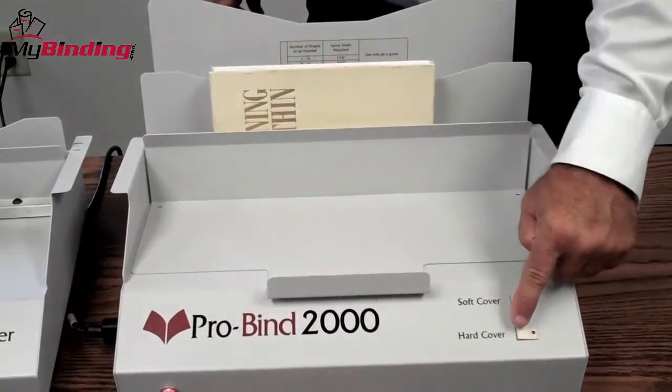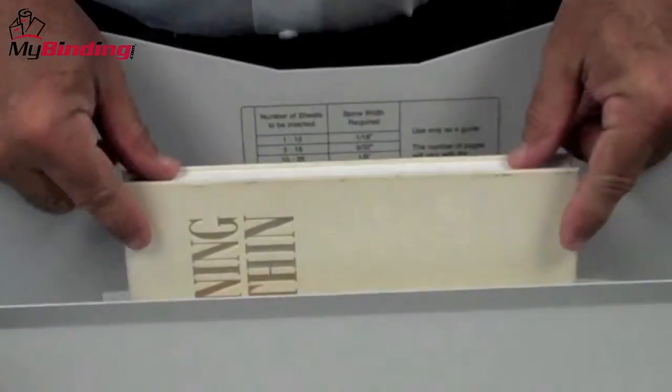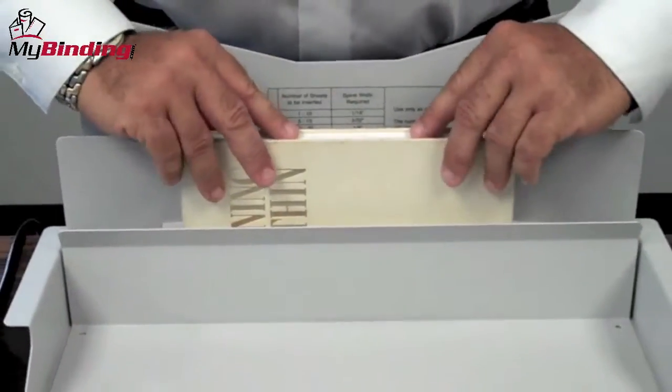With the book in place, slide the plate closed and select hardcover. At the end of the short binding cycle, tap and press down on the book block, assuring that it's all the way into that adhesive.